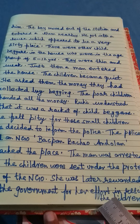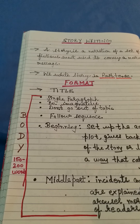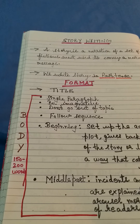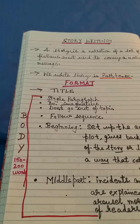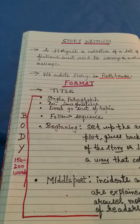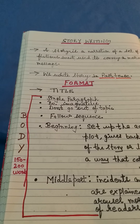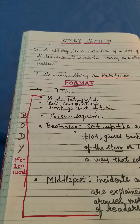Ruhi felt pity for the small children. She decided to inform the police and an NGO — Bachpan Bachao Andolan — which reached the place. The man was arrested and the children were sent under the NGO's protection. Ruhi was later rewarded by the government for her efforts in rescuing the children. Always follow this format to score marks. Keep practicing — unless you write on your own, you will improve. Stay fit, stay fine. Thank you.